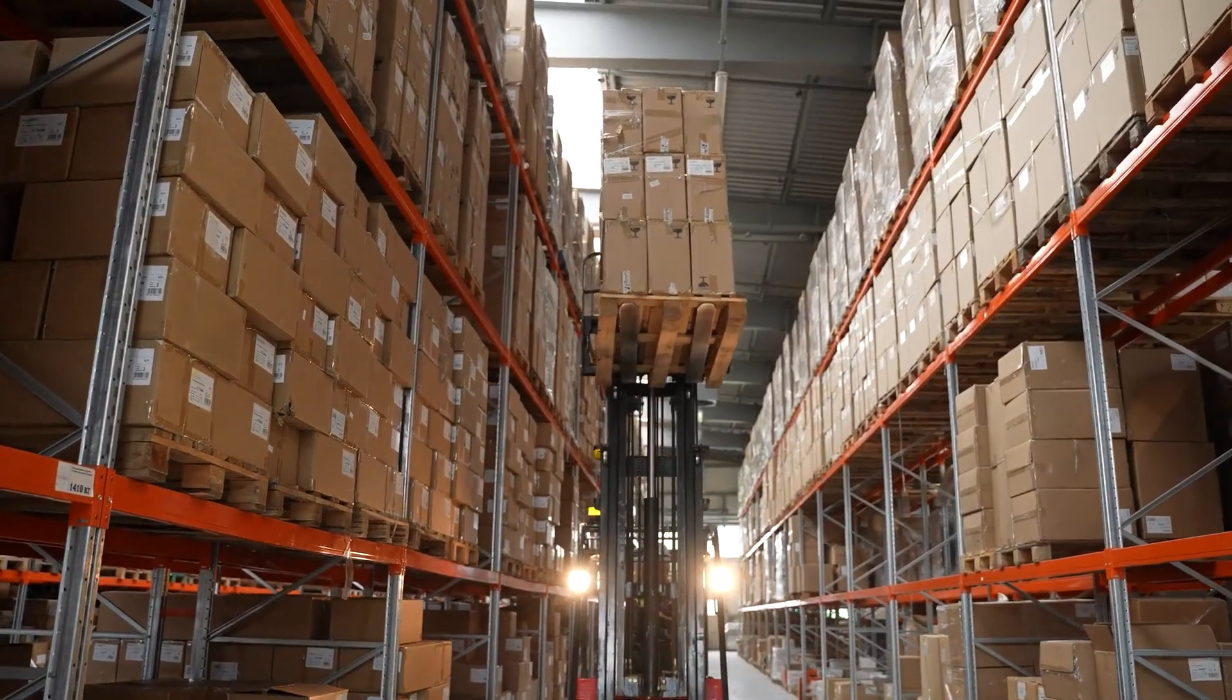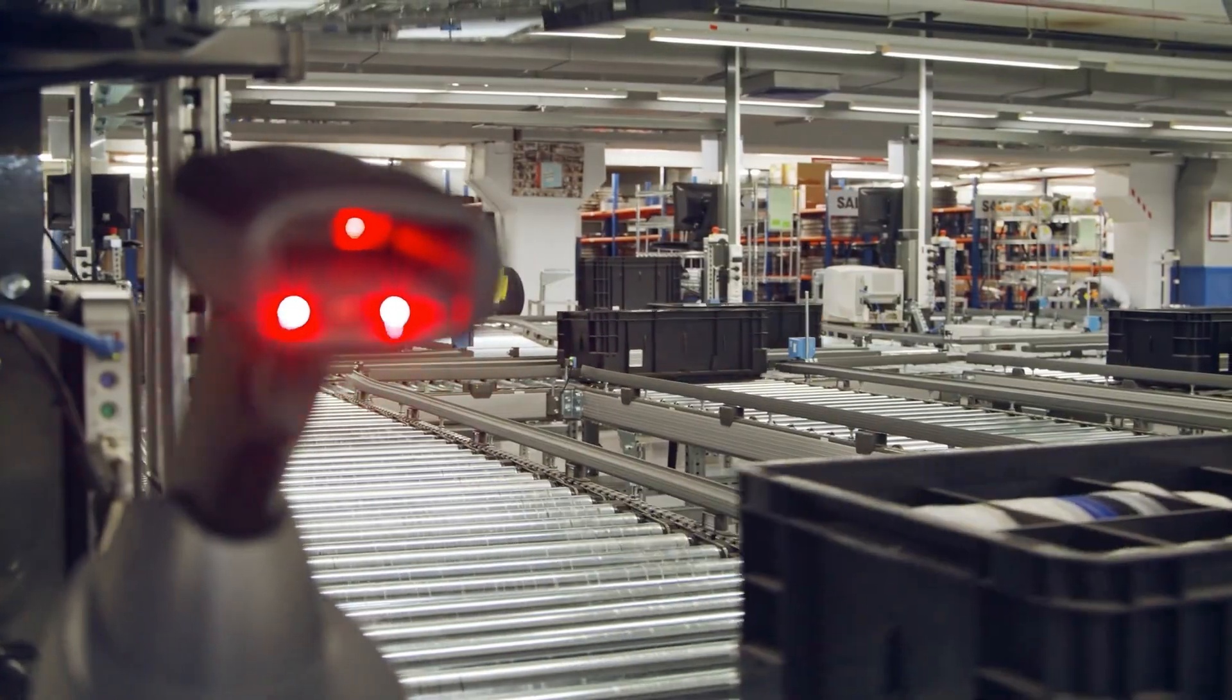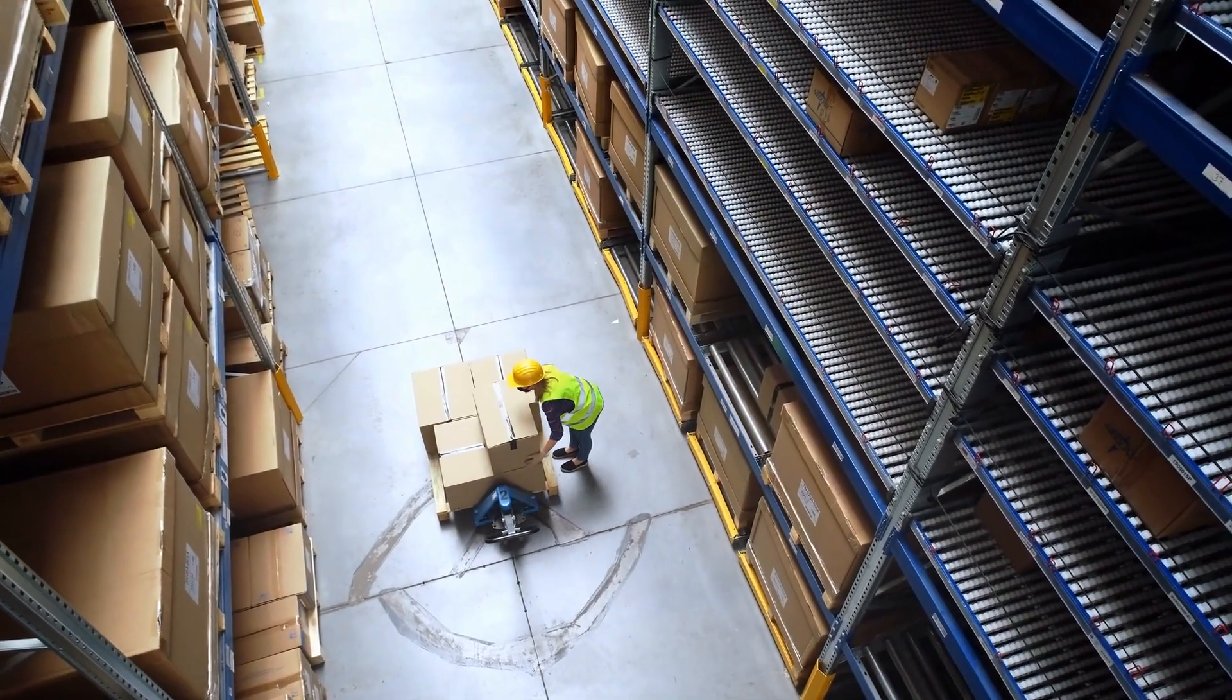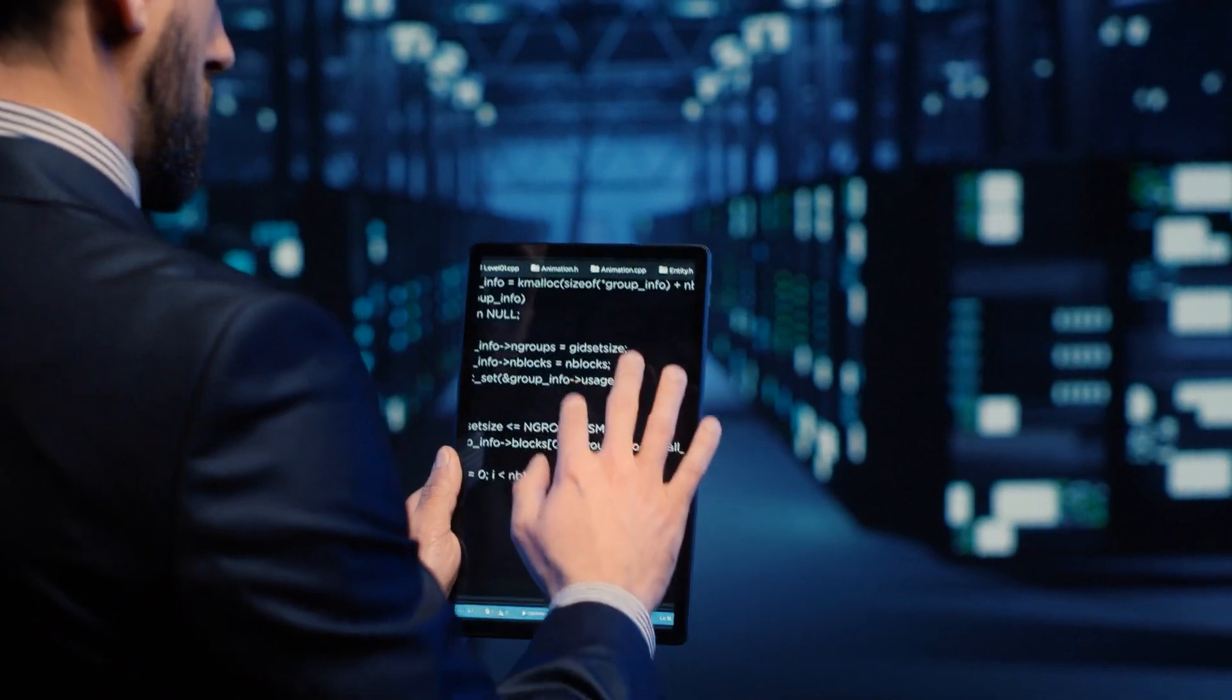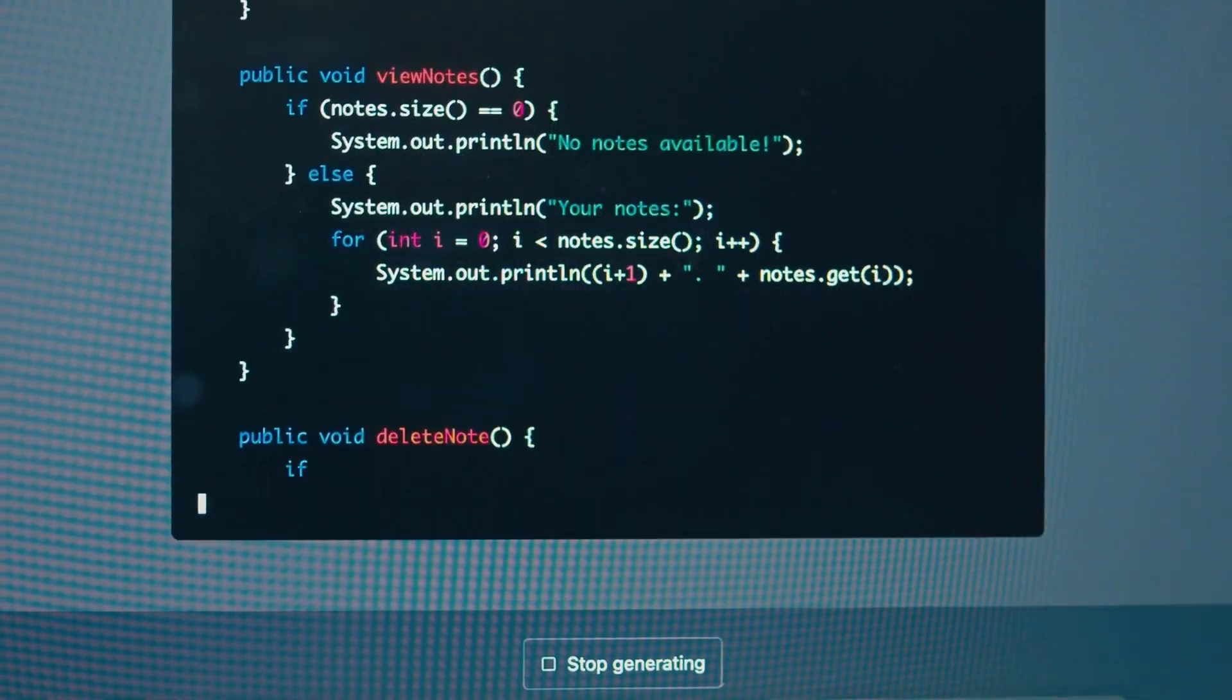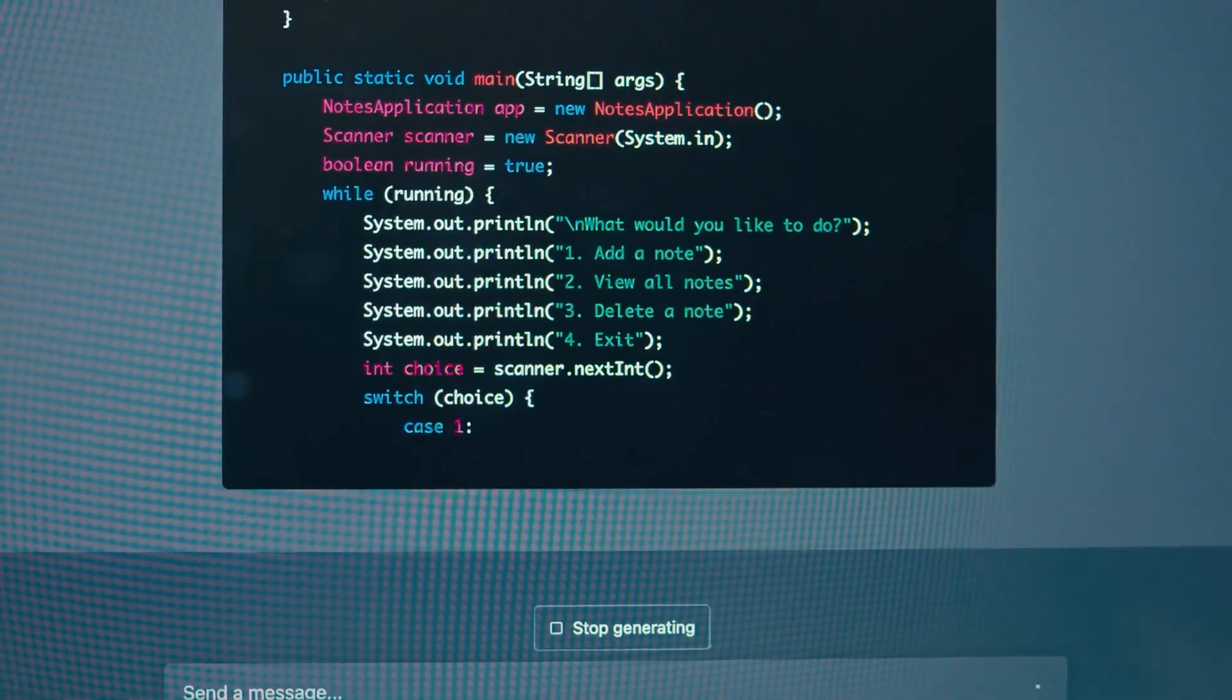Similarly, in warehouses, AI algorithms running on quantum computers could manage inventory levels dynamically, predicting demand patterns and adjusting stock accordingly. This would minimize overstocking and stockouts, improving efficiency and customer satisfaction. Moreover, AI algorithms enhanced by quantum computing could revolutionize predictive maintenance. By analyzing sensor data in real-time, machines could anticipate failures before they occur, preventing costly downtime and enhancing productivity.